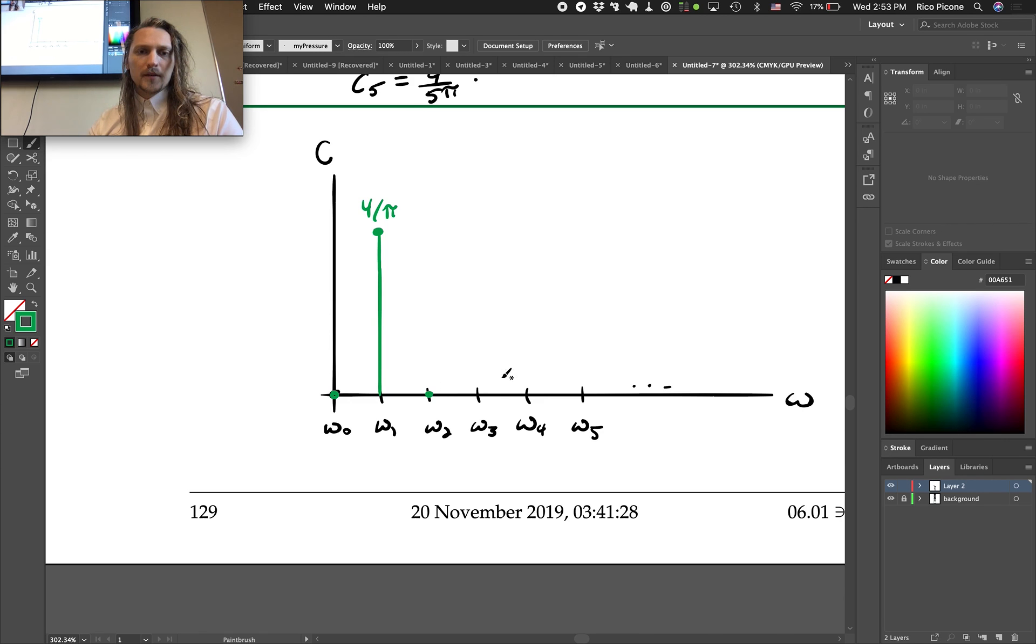For omega 1 we have 4 over pi, and then we have omega 2 is 0, and then c3 is 4 over 3 pi. Omega 4 is 0 and then c5 is 4 over 5 pi. And you can keep going with that. So there's our spectrum.